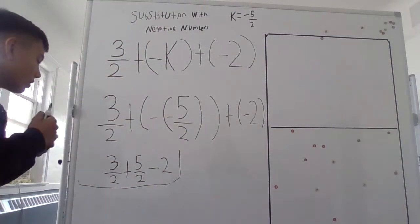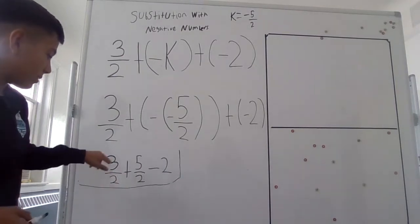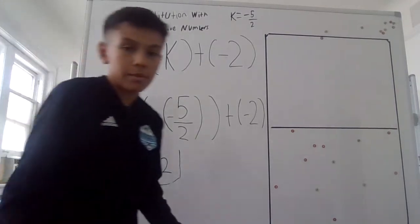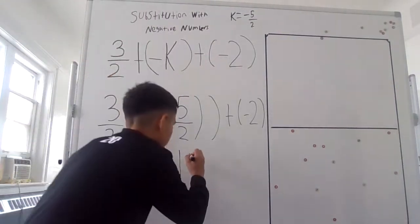So from here, if I answer it, it's going to be 8 over 2 since I already have a common denominator. So I do 8 over 2.